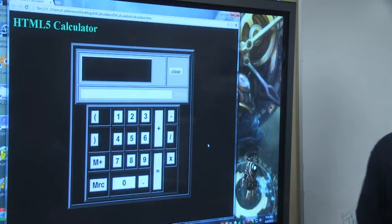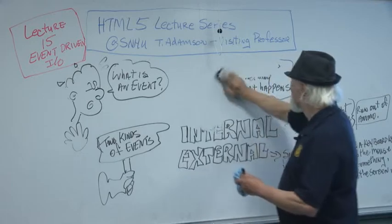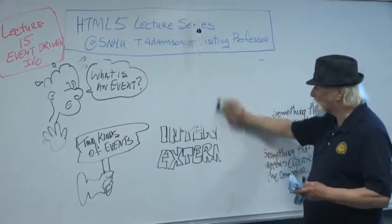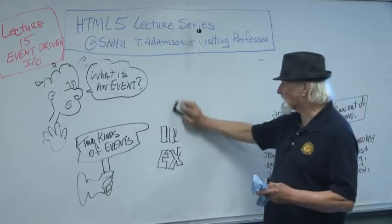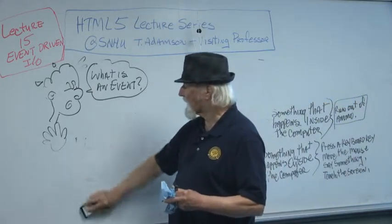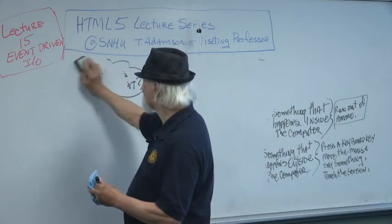Coming back to the board, this is the boring part. I'm going to be erasing this. So we know what an event is. An event is something that happens. There are two kinds of events when it comes to talking about HTML5 with the computer: one is an internal event and the other is an external event.